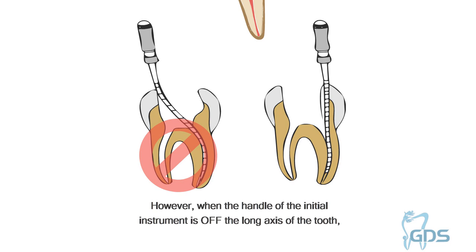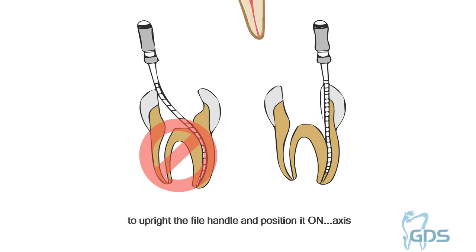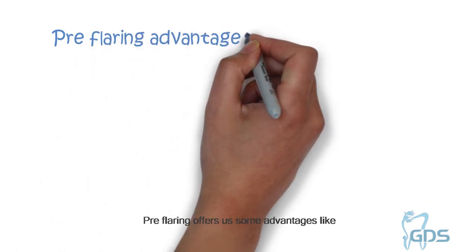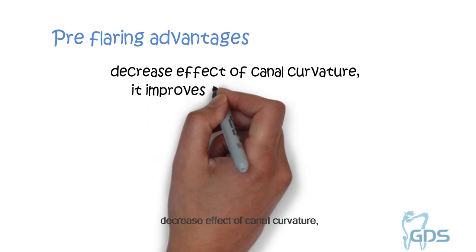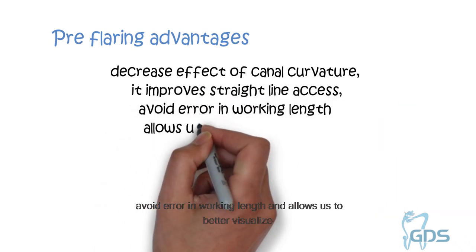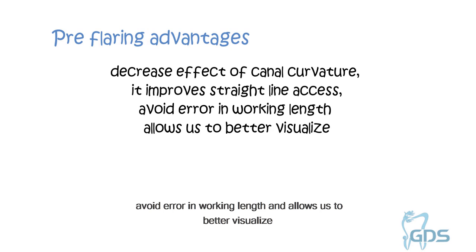However, when the handle of the initial instrument is off the long axis of the tooth, then the triangle of the dentine must be removed to upright the file handle and position it on axis. Pre-flaring offers us some advantages like decreasing the effect of canal curvature, it improves straight line access, avoids error in working length, and allows us to better visualize.